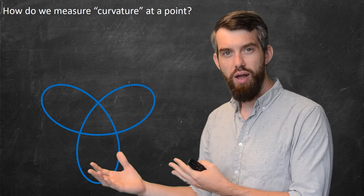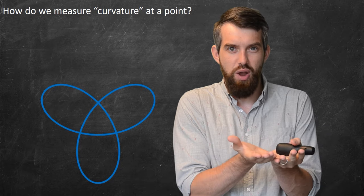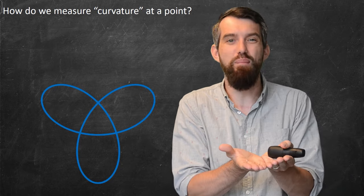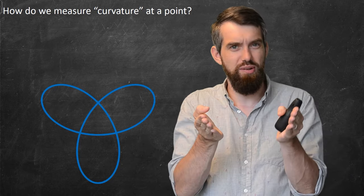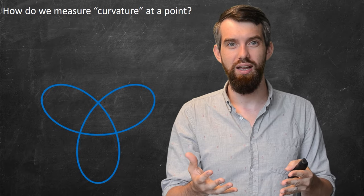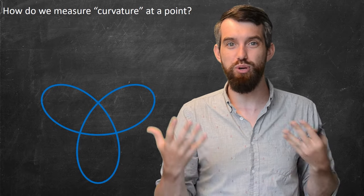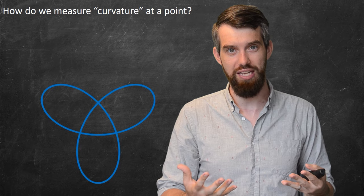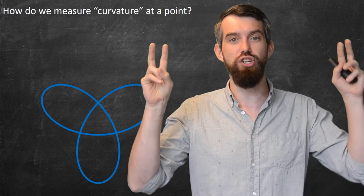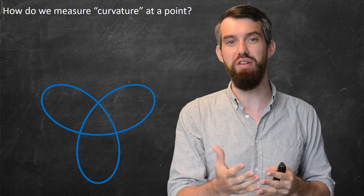When I look at a curve like this one, there are some places where it doesn't seem to be curving all that much, it's kind of flat, and others where it appears to be curving quite tightly. How do I come up with a precise measurement of what I mean by how curvy something is? What exactly is a definition of curvature? That's the point of this video.